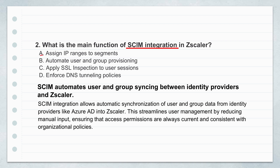So SCIM is like an automated sync tool — it keeps Zscaler's user list perfectly matched with your company's main identity system. Sounds like it saves admins a ton of manual work and potential errors. Definitely a headache reducer.